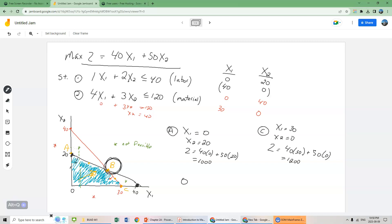So the optimal solution, just going to write this in here, x1 equals 24, x2 equals 8, and our profit is going to be 1360.